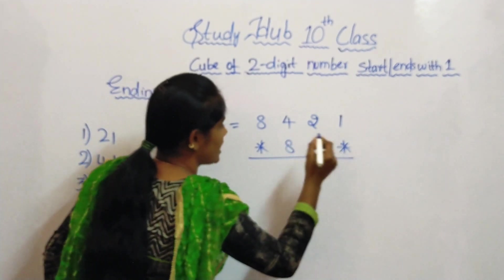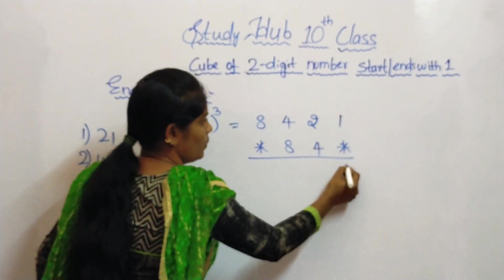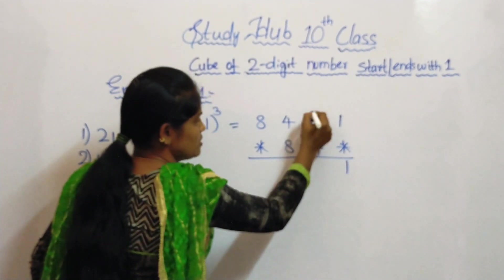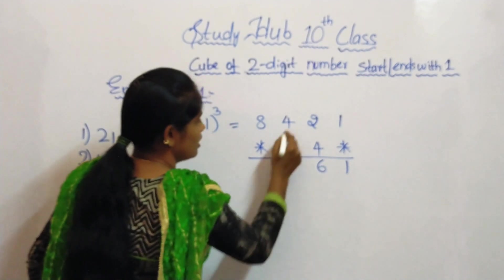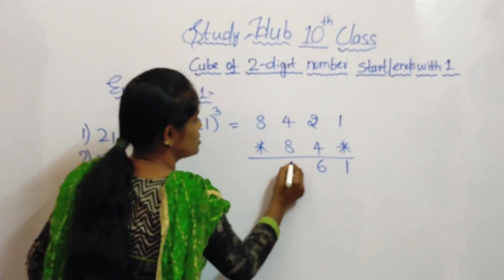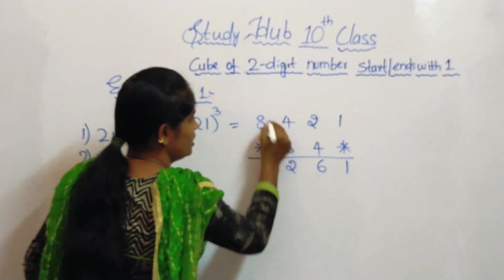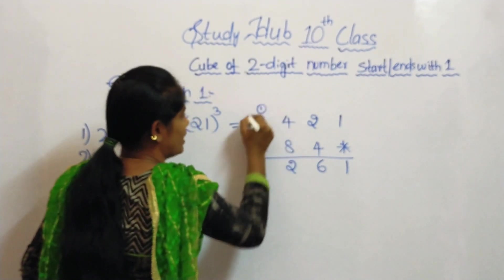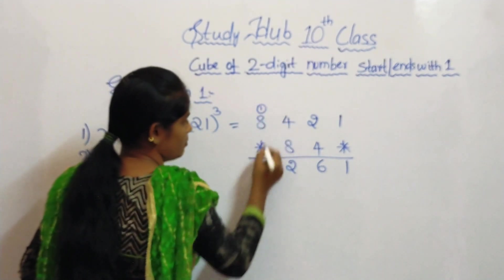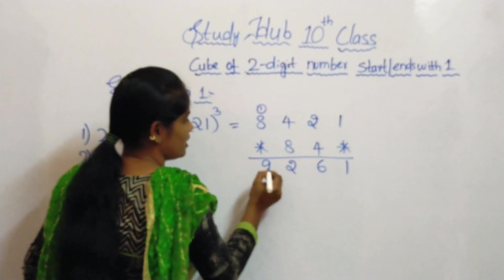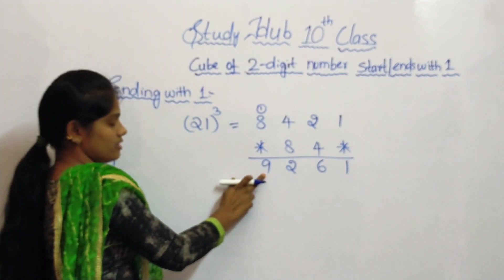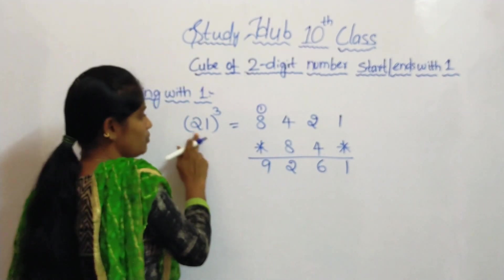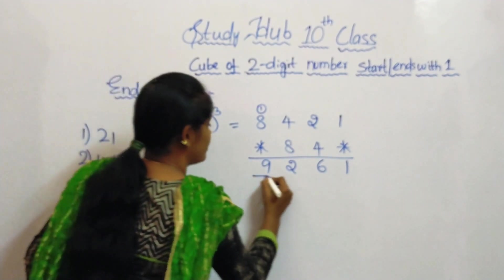Now start adding: 1, then 2 plus 4 is 6. 4 plus 8 is 12 — write 2 here and carry 1. 8 plus 1 is 9. This is the cube of the number 21.